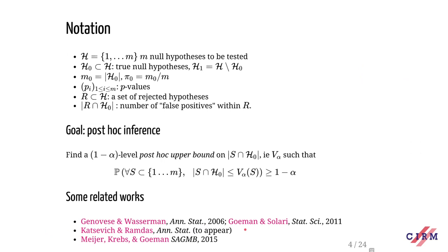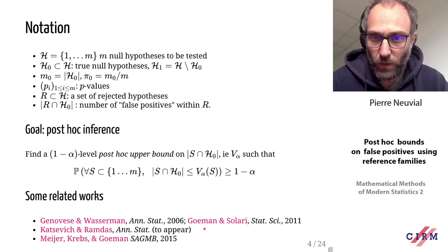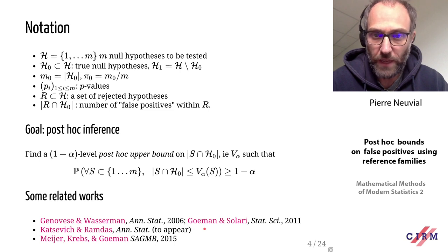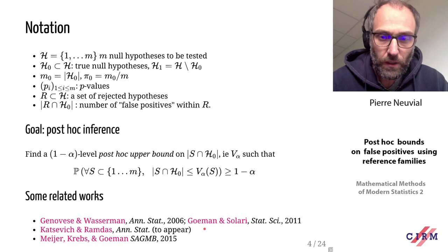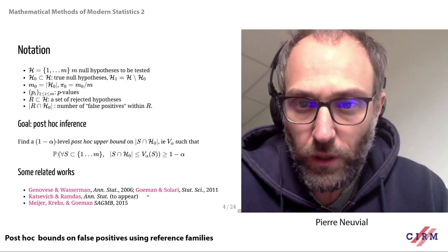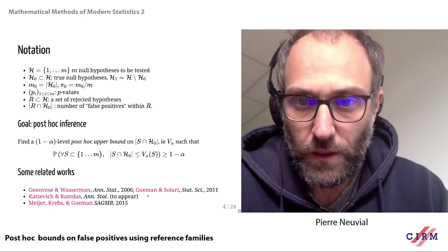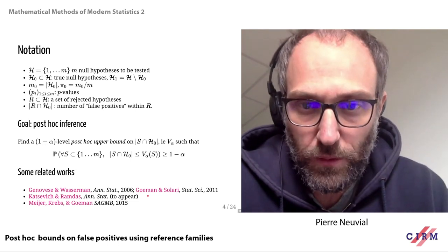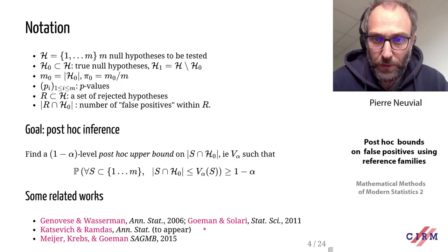We have a set H of m null hypotheses, with H₀ the subset of true nulls and H₁ the target of inference. m₀ is the cardinality of H₀, and π₀ = m₀/m is the proportion of true nulls. We assume access to p-values for each hypothesis i, where under the null the p-values are uniform, and under the alternative they are stochastically dominated by the uniform distribution.